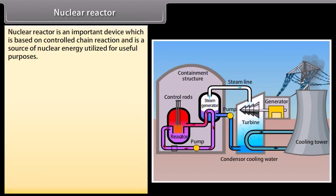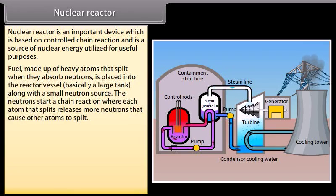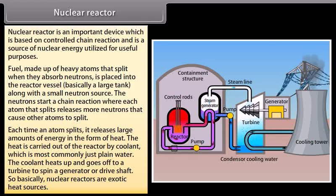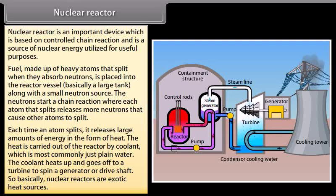Nuclear reactor. Nuclear reactor is an important device which is based on controlled chain reaction and is a source of nuclear energy utilized for useful purposes. Fuel made up of heavy atoms that split when they absorb neutrons is placed into the reactor vessel, basically a large tank, along with a small neutron source. The neutrons start a chain reaction where each atom that splits releases more neutrons then cause other atoms to split. Each time an atom splits, it releases large amount of energy in the form of heat. The heat is carried out of the reactor by coolant, which is most commonly just plain water. The coolant heats up and goes off to a turbine to spin a generator or drive shaft. So basically, nuclear reactors are exotic heat sources.